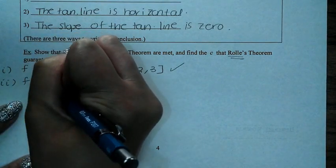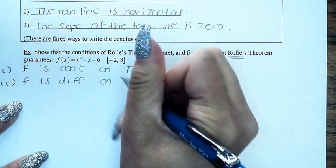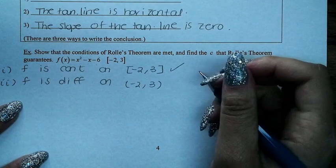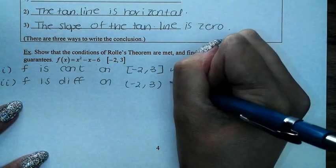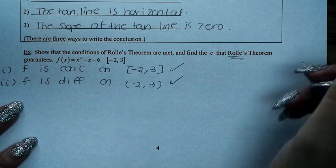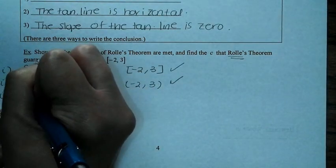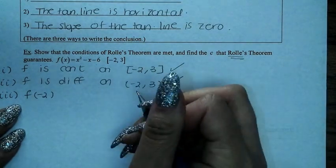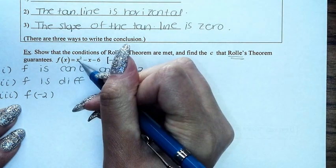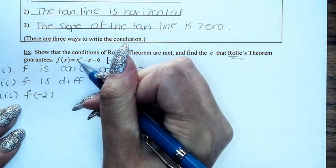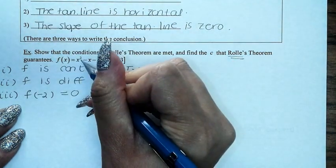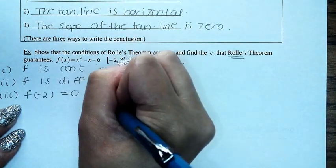Is it differentiable on the open interval (-2, 3)? Do you see any situation where you have a cusp, a sharp turn, or some kind of discontinuity? Absolutely not. It's a parabola facing up, so everything is fine. The third condition is that f(-2) equals f(3). Let's compute: plugging in -2 gives 4 + 2 - 6 = 0. Plugging in 3 gives 9 - 3 - 6 = 0. So they are equal — check.